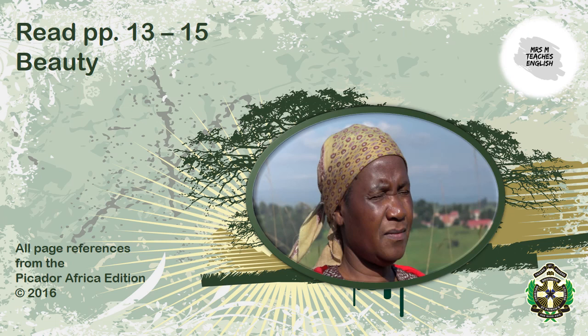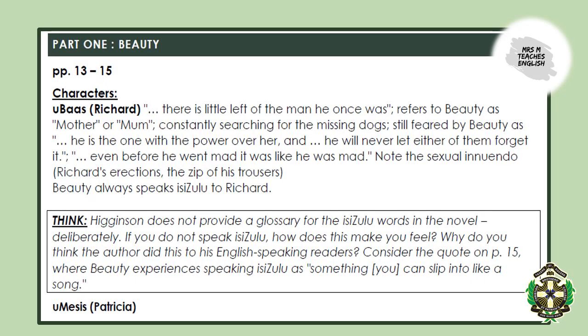You will now be introduced to Beauty, one of the remaining farm workers at Dwaleni. She's a domestic worker who has the unenviable task of seeing to the needs of Richard Wiley. Pause the video as you read pages 13 to 15 of the novel. Beauty and Richard have a complicated relationship. Beauty is clearly the employee, the servant, but Richard's dominance is waning as his mental faculties deteriorate. Richard seems to be aware of this, and so strives to exert his power over Beauty.